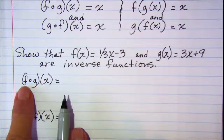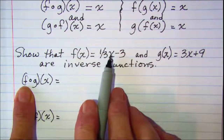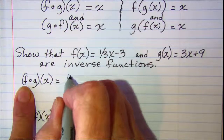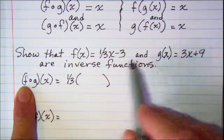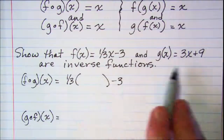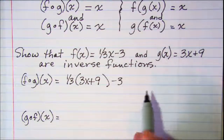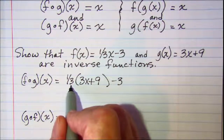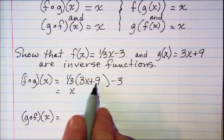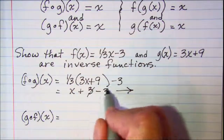Starting with f composition g, I need to write my f function, and every place where I see an x I'm going to substitute in my g function — the whole expression. So I have one-third times, then minus 3, and in place of x I write my g function, which is 3x plus 9. Simplifying using the distributive property: one-third times 3x is x, one-third times 9 is 3, and then minus 3, so this equals x.